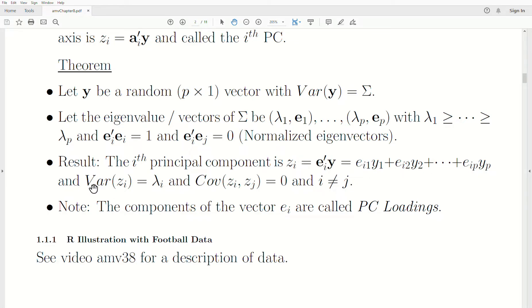The result is that the ith principal component is zi = e'iy = ei1y1 + ei2y2 + ... + eipyp, and Var(zi) = λi, with Cov(zi, zj) = 0 if i ≠ j. Note that the components of the vector ei are called PC loadings, and those will have information stored in them which we will cover in the next video.